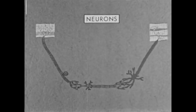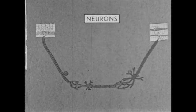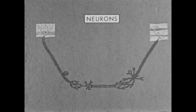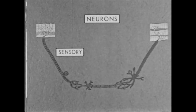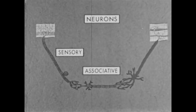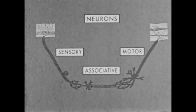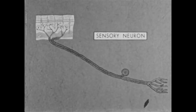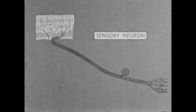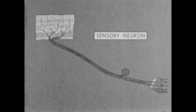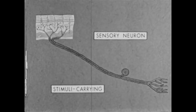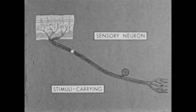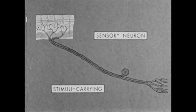Here we've drawn the three kinds of neurons or nerve cells with attached fibers. They are sensory neurons, associative neurons, and motor neurons. The function of sensory neurons is to carry impulses made by stimuli inside or outside the body.